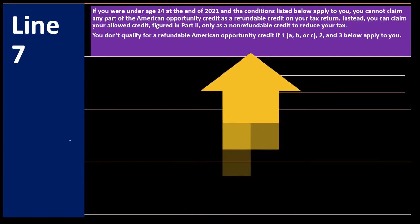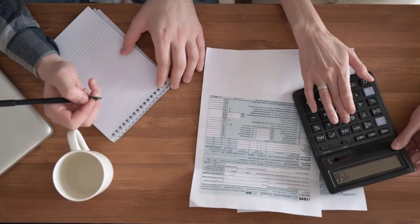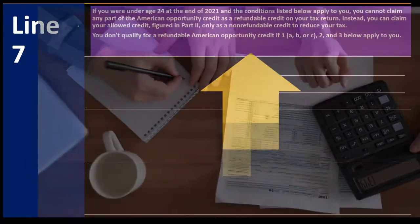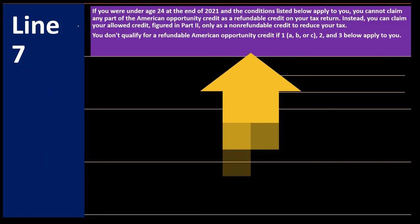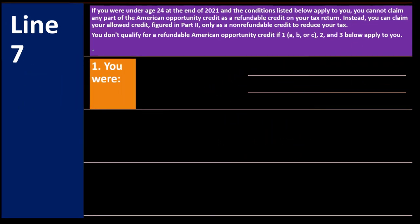Line 7: if you were under age 24 at the end of 2021 and the conditions listed below apply, you cannot claim any part of the American Opportunity Credit as a refundable credit. Instead, you claim the allowed credit figured in Part 3 only as a non-refundable credit. You don't qualify for the refundable American Opportunity Credit if conditions 1A, B, or C, plus 2 and 3 apply.